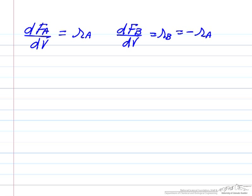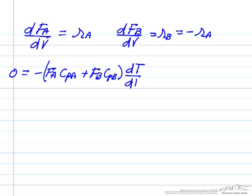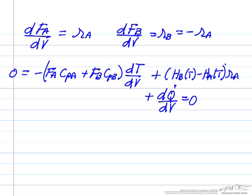So if we make those substitutions and do some rearrangements, we end up with that 0 is minus the flow rate of A times the heat capacity of A. And let me combine these terms, flow rate of B, heat capacity of B, times the derivative of temperature with respect to volume. What this means, of course, is how is the temperature changing as we're moving down the reactor. So at the beginning of the reactor, volume equals 0. The temperature changes as we move down the reactor. And then we'll have, again, by rearranging, we'll have HB evaluated at T minus HA evaluated at T multiplied by that rate of reaction. And the dQ dot for heat transfer is equal to 0.